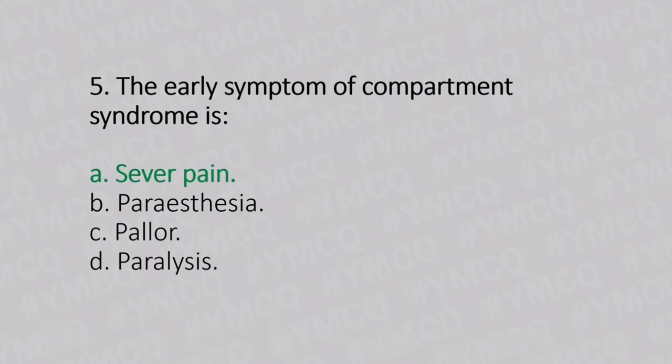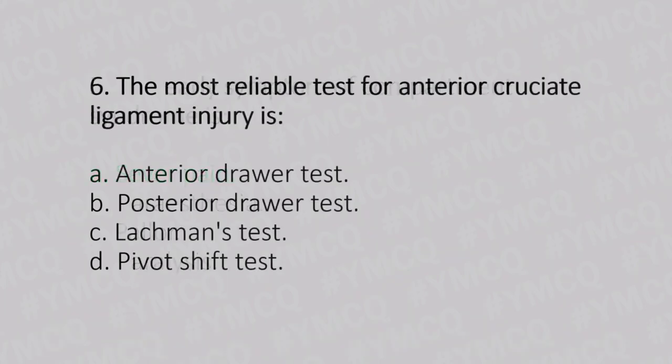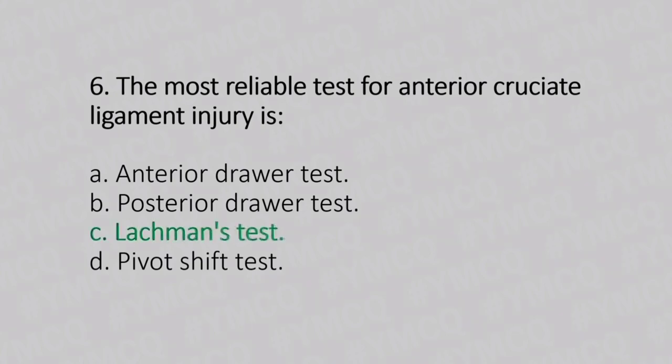Now let's move to question number 6. The most reliable test for anterior cruciate ligament injury is. Option A: anterior drawer test. Option B: posterior drawer test. Option C: Lachman's test. Option D: pivot shift test. And the answer is Option C, Lachman's test.